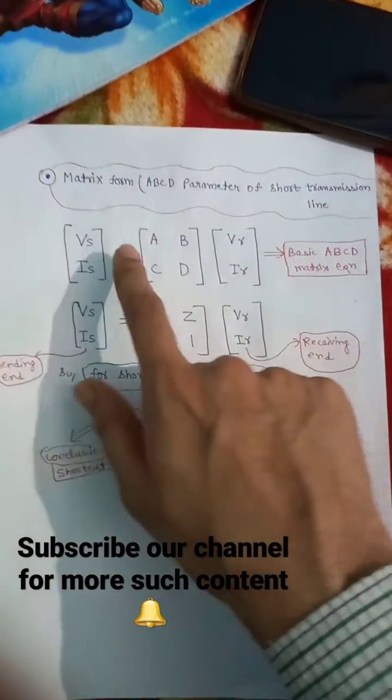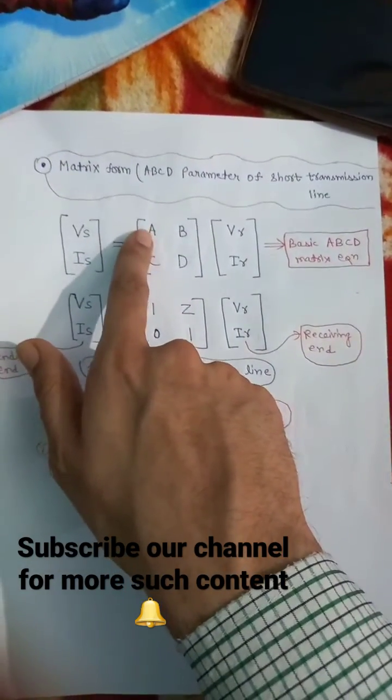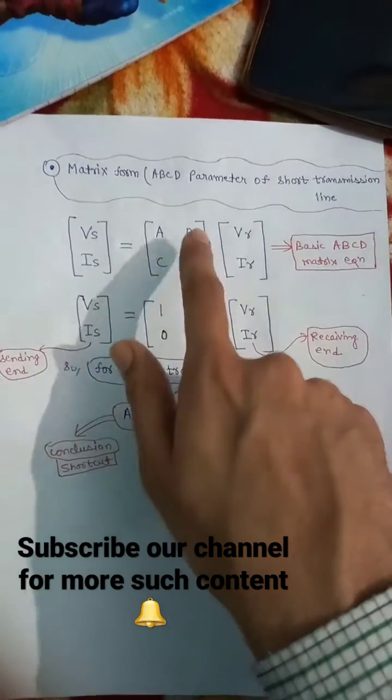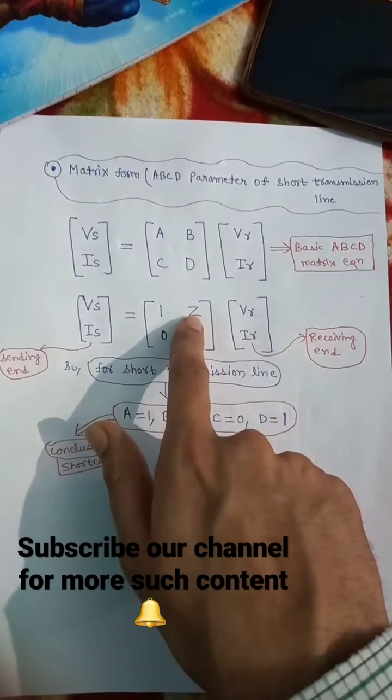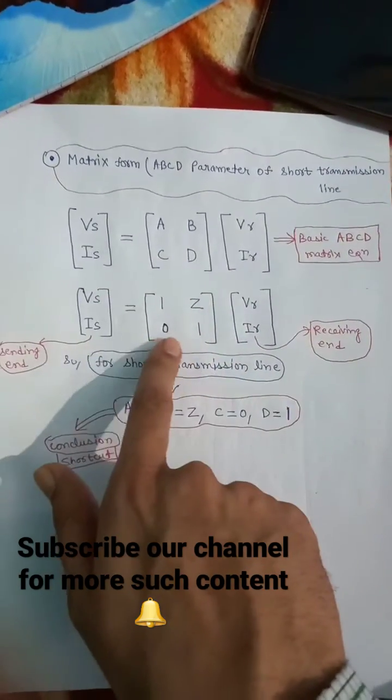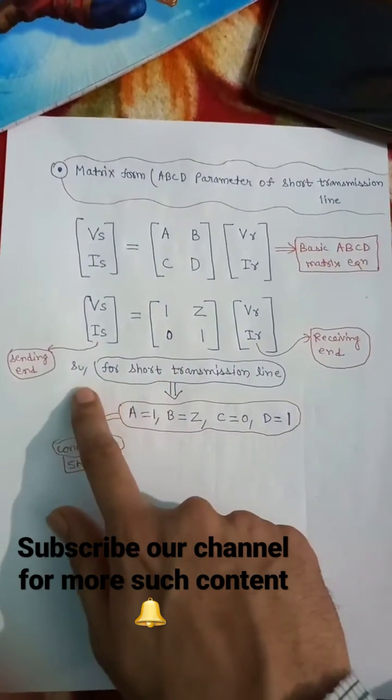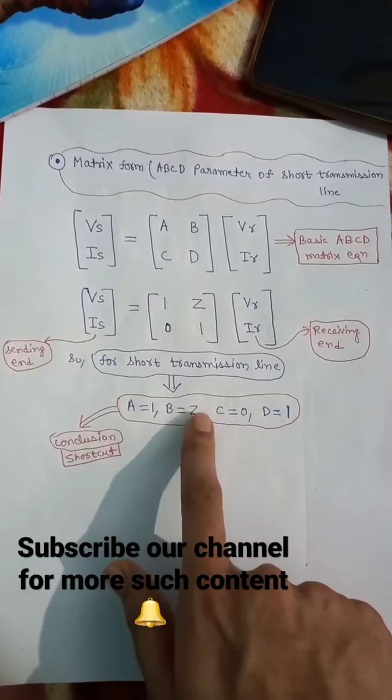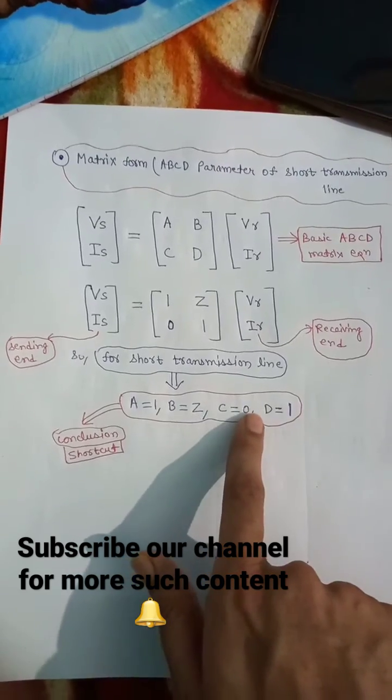So simply the shortcut method is we have to do nothing but simply put A and D equal to 1, B put directly to Z that is impedance, and C put directly to 0. So the shortcut method is for the short transmission line A equals D equals 1, B equals Z and C equals 0.